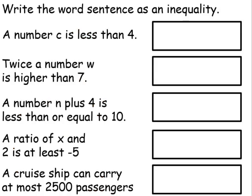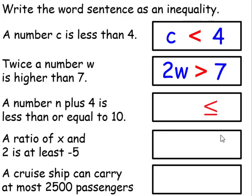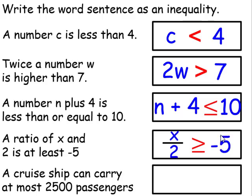Let's write the word sentences as inequalities. 'A number C is less than 4' — is less than is this inequality symbol, so C is less than 4. 'Twice a number W is higher than 7' — higher than means greater than, so 2W is greater than 7. 'A number N plus 4 is less than or equal to 10' — the inequality is N plus 4 is less than or equal to 10. 'A ratio of x and 2 is at least negative 5' — at least represents greater than or equal to, so x over 2 is greater than or equal to negative 5.